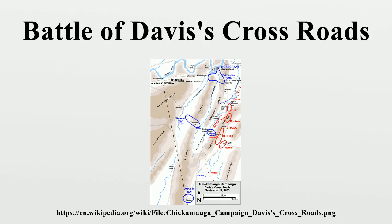Due to misinformation and poor intelligence, Rosecrans was convinced that Bragg was demoralized and was retreating to Dalton, Georgia, farther to the southeast. But once Bragg realized that the Union forces had separated and were vulnerable, he intended to attack Thomas, halt his advance, and defeat him.